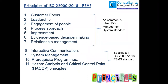The principles of ISO 22000:2018 include, like other ISO standards: customer focus, leadership, engagement of people, process approach, improvement, evidence-based decision making, and relationship management. In addition to those, interactive communication, system management, prerequisite programs, and hazard analysis and critical control point (HACCP) principles are also included. These are all the principles you need to follow in your ISO 22000:2018 implementation.